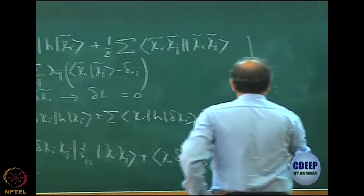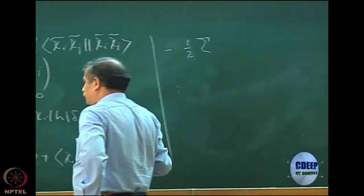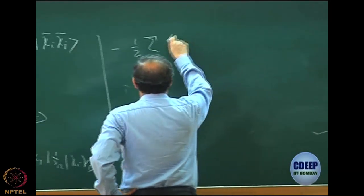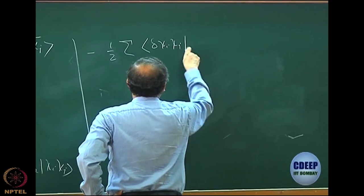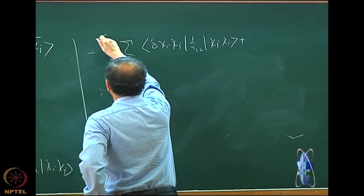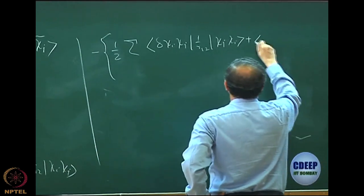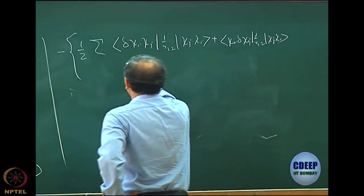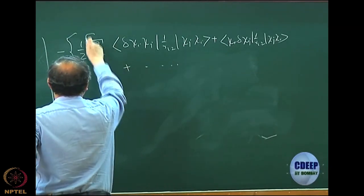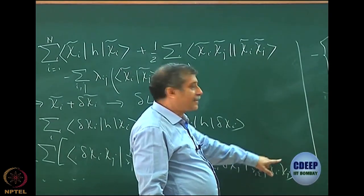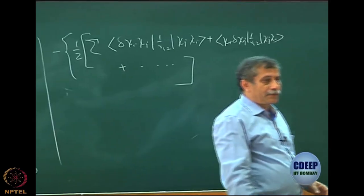The exchange contribution gives: ⟨δχᵢ χⱼ|1/r₁₂|χⱼ χᵢ⟩ plus ⟨χᵢ δχⱼ|1/r₁₂|χⱼ χᵢ⟩, with a minus sign, plus two more terms coming from differentiating the right-hand side — ⟨χᵢ δχⱼ⟩ and similar. I am not writing all of them explicitly.